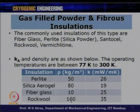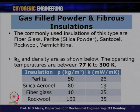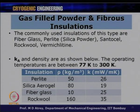The apparent thermal conductivity Ka and density for powder and fibrous insulations at 77 K to 300 K are: perlite powder Ka ≈ 26 mW/m·K; silica aerosol Ka ≈ 19 mW/m·K; fiberglass (density ~10 kg/m³) Ka ≈ 25 mW/m·K; rockwool (density ~160 kg/m³) Ka ≈ 35 mW/m·K. Compared to expanded foam (30–60 mW/m·K range), the gas-filled powder range is around 20–35 mW/m·K — a notable improvement.